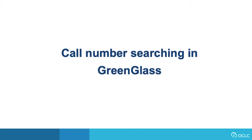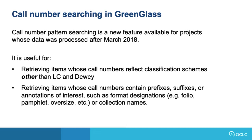In cases where we have significant numbers of titles without a valid LC or Dewey call number, we need another option. Call number pattern searching is a new feature available for projects whose data was processed after March 2018. It is useful for retrieving items whose call numbers reflect classification schemes other than LC and Dewey, and also for retrieving items whose call numbers contain prefixes, suffixes, or annotations of interest, such as format designations or collection names.